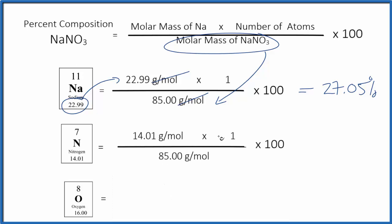We have our atomic mass, we only have one nitrogen atom, divide by the molar mass, multiply by 100 to get 16.48 percent as the percent mass composition of the nitrogen in sodium nitrate.